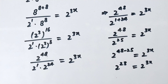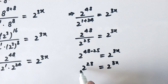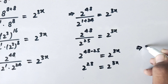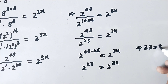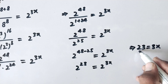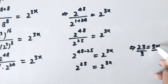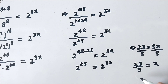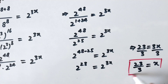Now we can see that the bases are the same on both sides, so by comparing the powers we get 23 equal to 3x. Dividing both sides by 3 to eliminate it, x is equal to 23 over 3. That is our final answer: x equals 23 over 3.